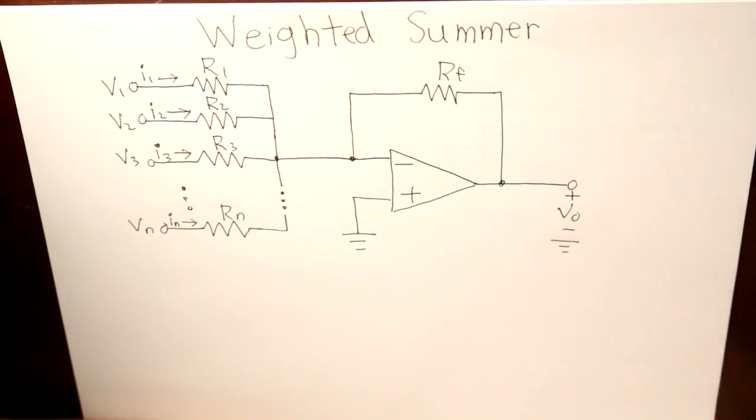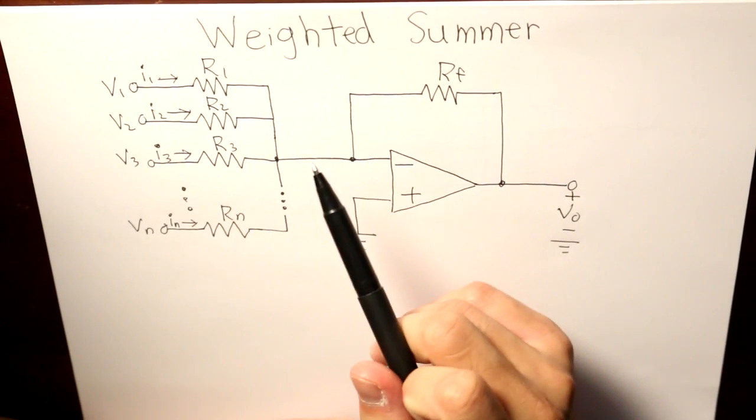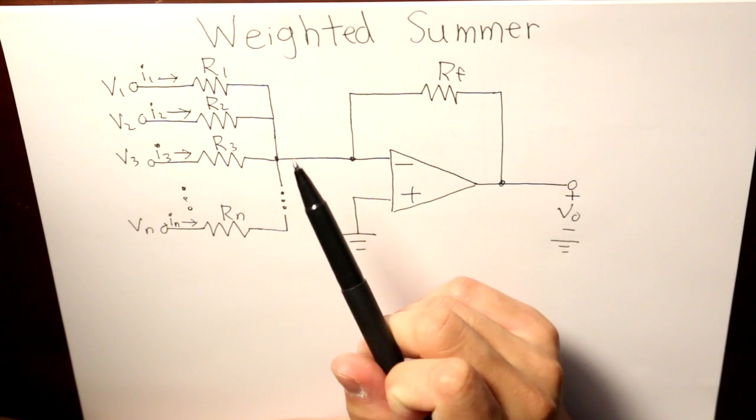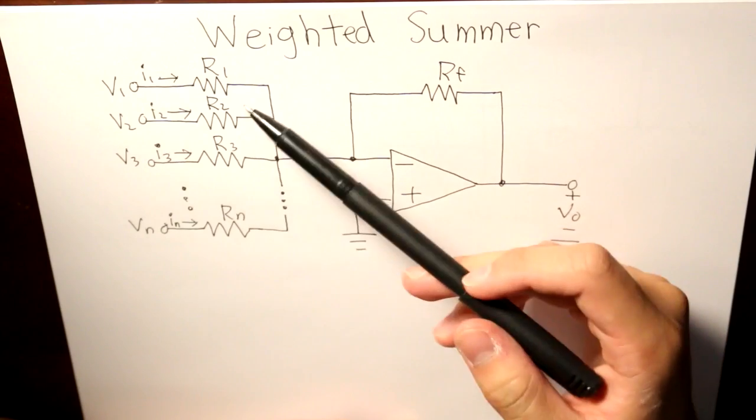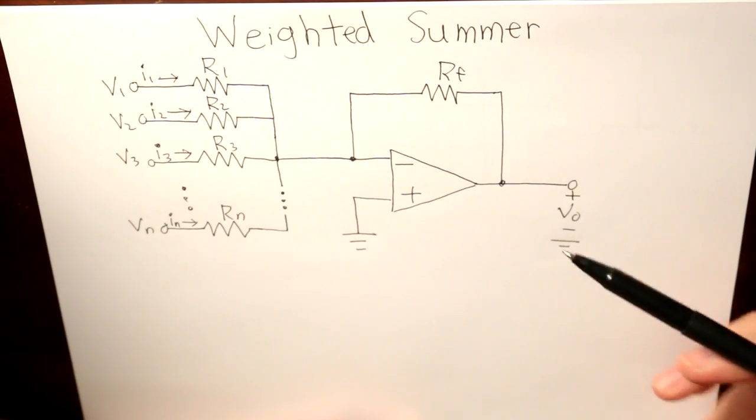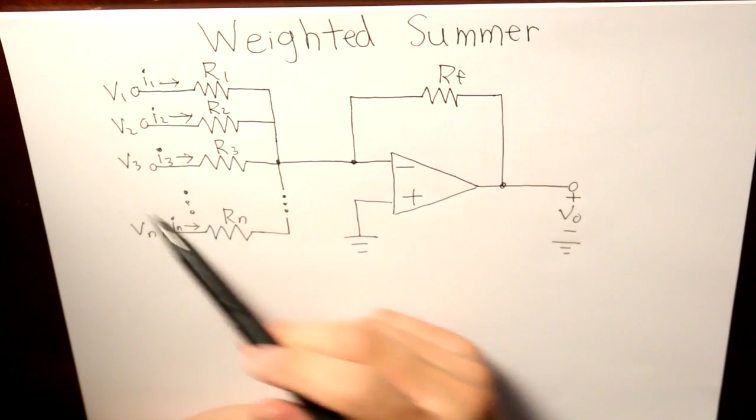These voltages, if we multiply the ratio between the feedback resistor Rf to whatever that input resistance is in series with the input voltage, that addition would give us the output voltage. So this is a basic example of how the weighted summer would look like.